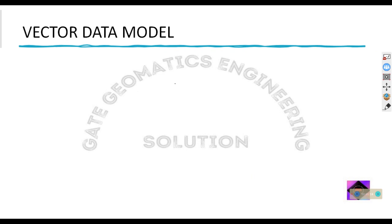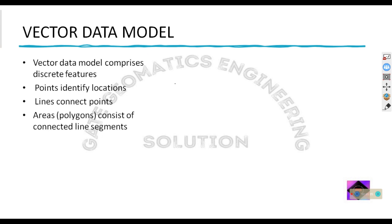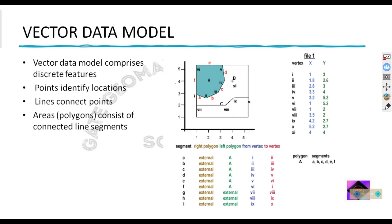The vector data model is a discrete type of data model, represented by point, line, and polygon. A point identifies the location of any feature. A line is created when we connect two points. Areas are generally polygons, which are connected line segments. For example, point one represents the x and y location (1, 3), and point two represents the position (1.8, 2.6).